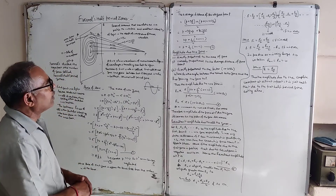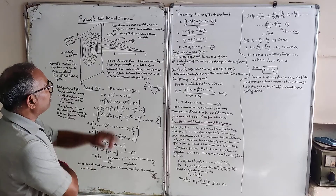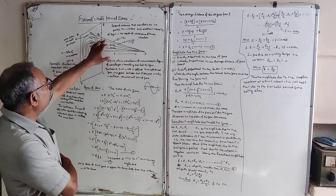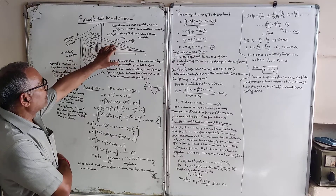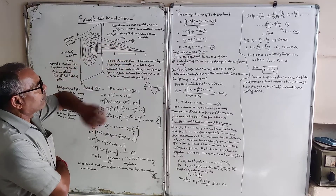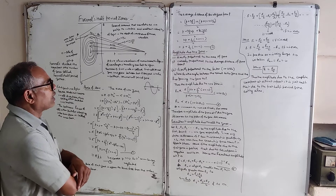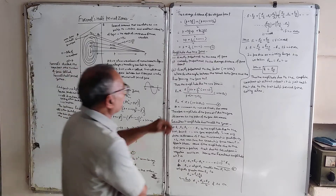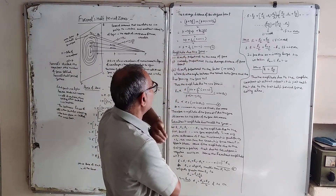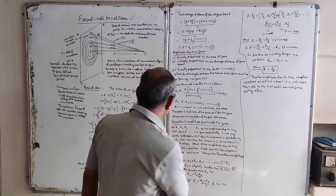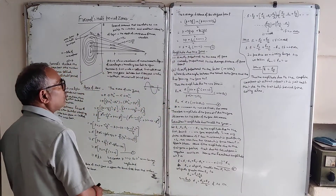The average distance of the nth zone from point P is [P + n·(lambda/2) + P + (n−1)·(lambda/2)] divided by 2, which simplifies to P + lambda/4·(2n−1).